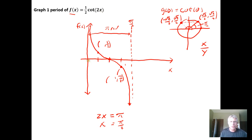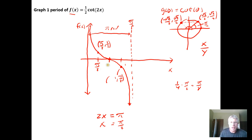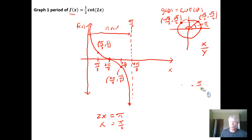The distance from 0 to π/2 is broken into four equal regions. To find the first tick mark, take a quarter of π/2, which gives π/8. Counting up: π/8, 2π/8, 3π/8, 4π/8 (which reduces to π/2). The key point at 3π/8 corresponds to an output of −1/2. This gives us a reasonable sketch of one period of the transformed cotangent function.